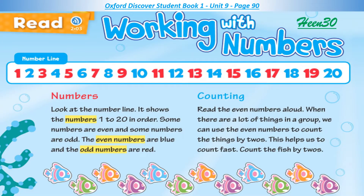Page 90. Read: Working with Numbers. Look at the number line. It shows the numbers 1 to 20 in order. Some numbers are even and some numbers are odd. The even numbers are blue and the odd numbers are red.